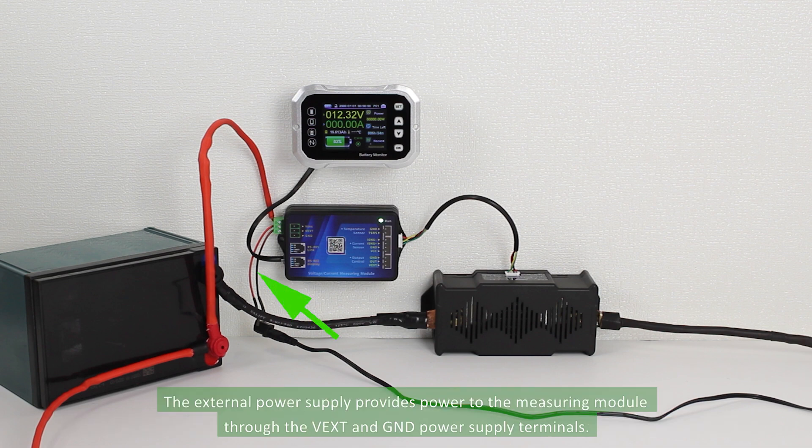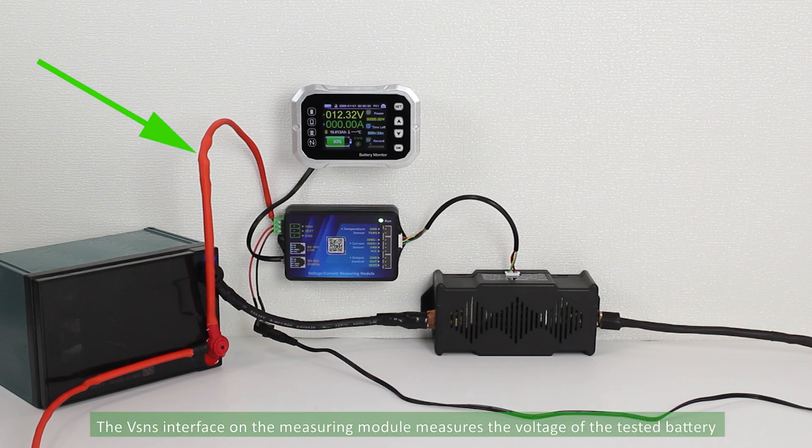The external power supply provides power to the measuring module through the VEXT and GND power supply terminals. The VSNS interface on the measuring module measures the voltage of the tested battery, and the charging and discharging current of the battery passes through the sampler.